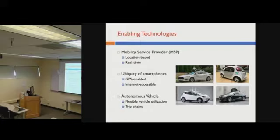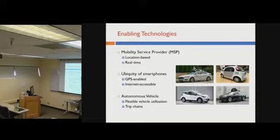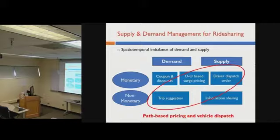With the rapid advancement of self-driving technology, autonomous vehicles may even revolutionize on-demand ride sharing systems. By using autonomous vehicles, we can remove drivers, making the system more flexible and reliable, and allowing the service provider to control vehicles much more easily. This is also why Uber and Lyft are so dedicated to developing autonomous vehicle technologies. But for ride sharing, we still face the spatial-temporal imbalance between demand and supply. In our research, we propose a so-called path-based pricing and vehicle dispatch strategy to address this issue.